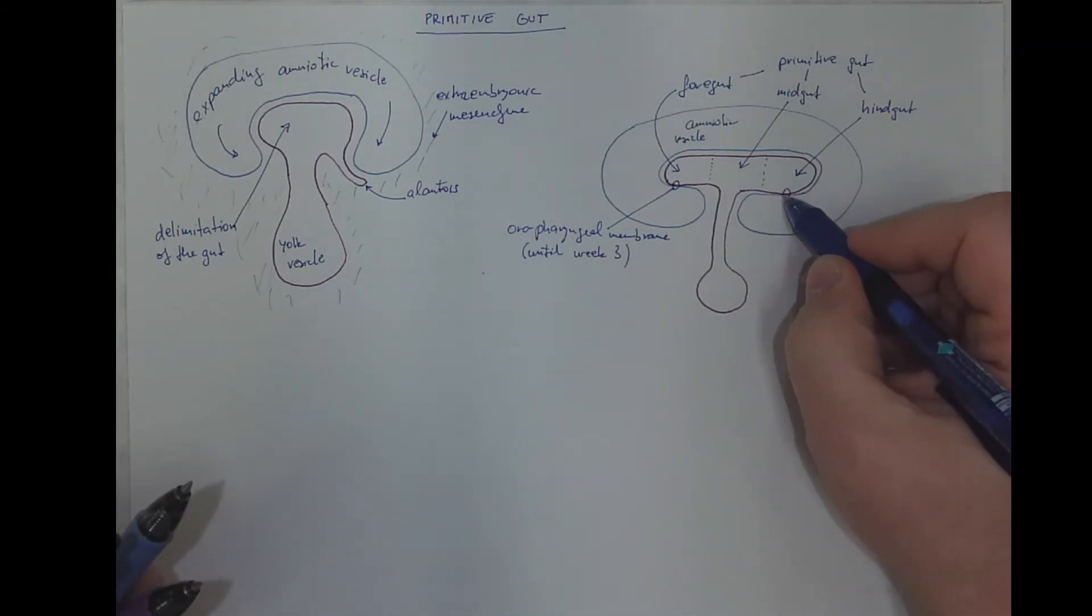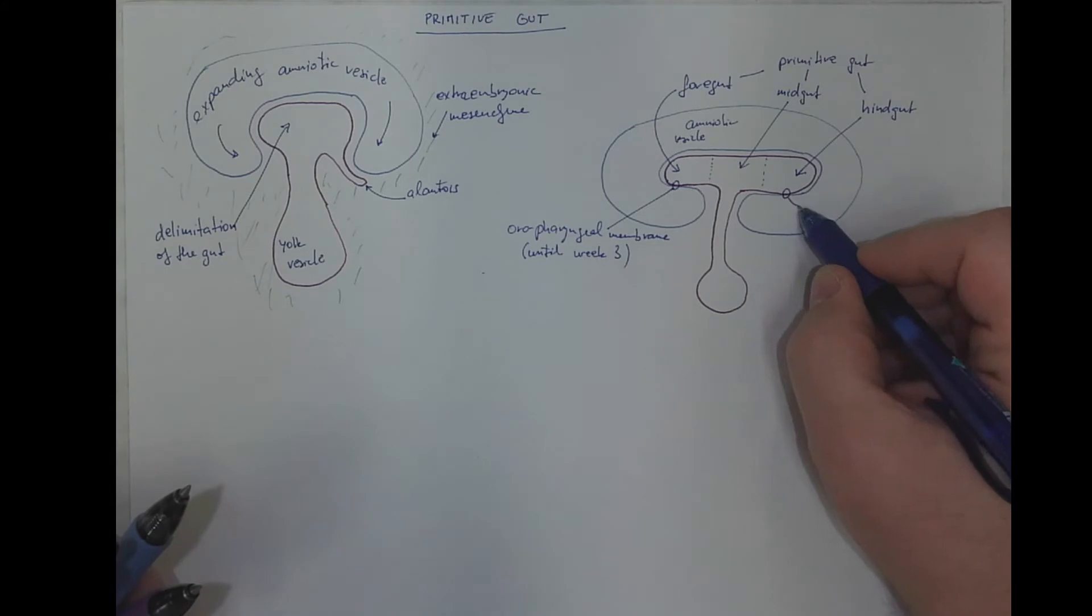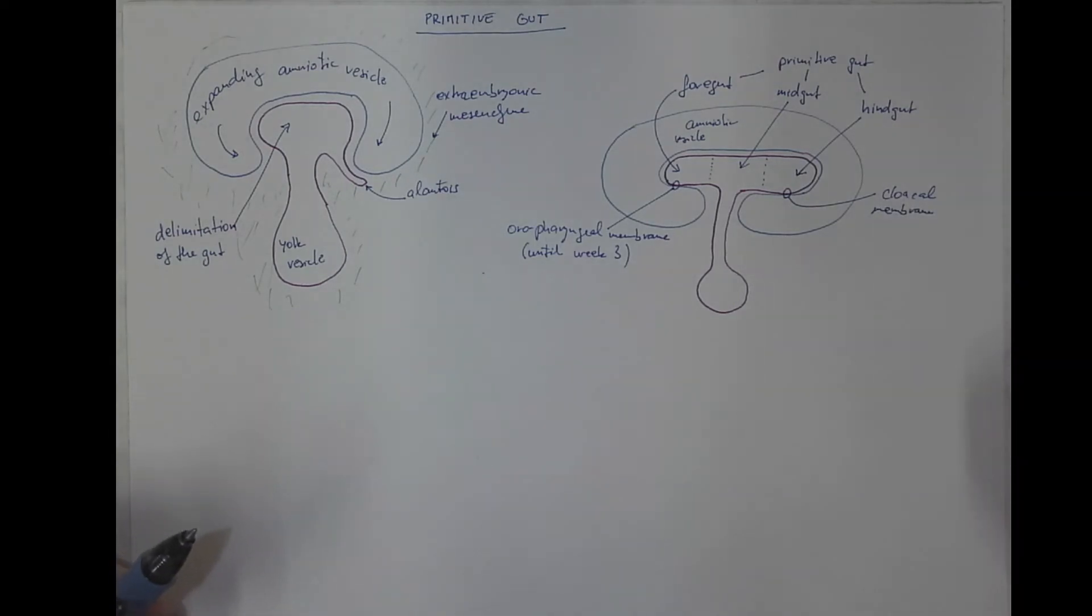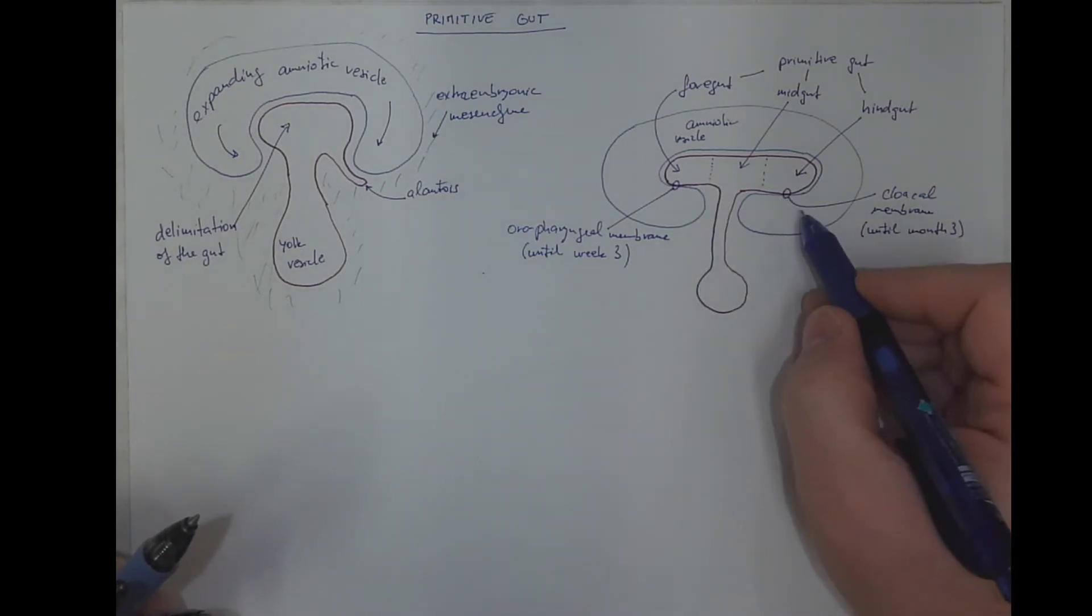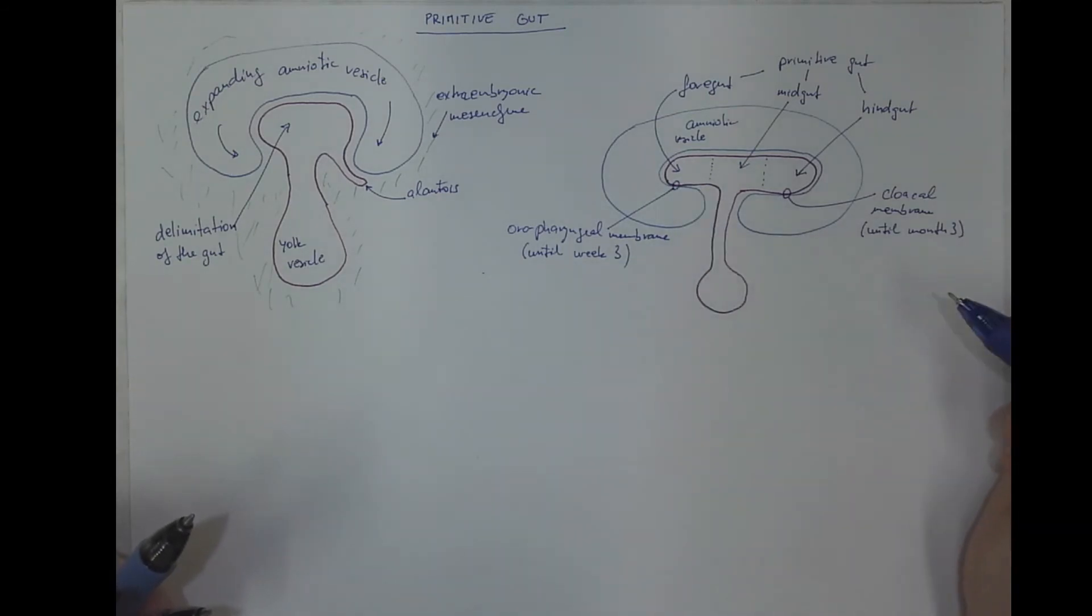And posteriorly it's the cloacal membrane. Cloaca being the term used for the common openings of the gastrointestinal and genital and urinary systems. This persists until the third month. So both these membranes will break down and opening the communication between the ectoderm and the endoderm.